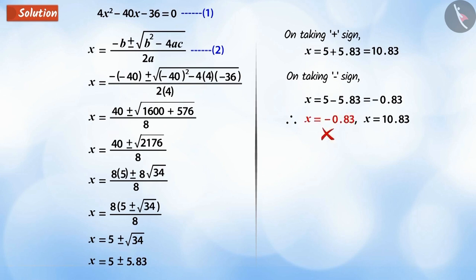Because x is the speed of the ship, therefore, it cannot be negative. Hence, we leave the value x equals minus 0.83. So we get, from x equals 10.83 that the speed of the ship is 10.83 km per hour.